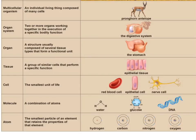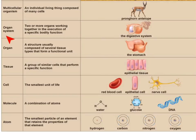Examples of cells include red blood cells, epithelial cells, and nerve cells. Cells grouping together form tissues; there are four kinds of tissues, and epithelial tissue is one example — these are similar cells that perform a specific function in the body. Tissues form together to make organs, such as the stomach. Organs form together to make an organ system within an organism, such as the digestive system, which is two or more organs working together for a specific bodily function.